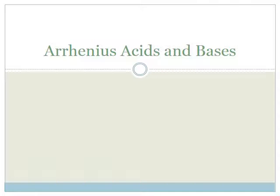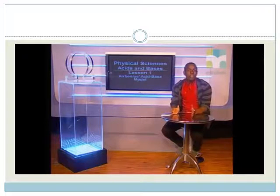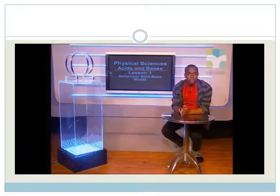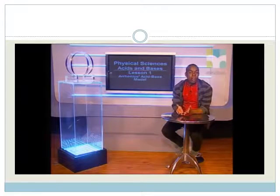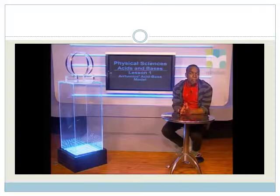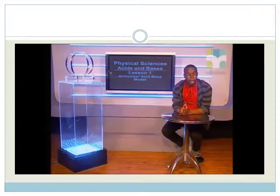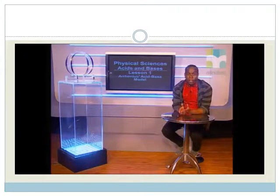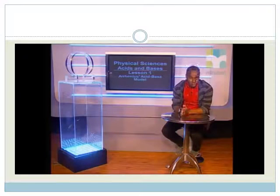Specifically, we're going to be learning about Arrhenius' definition of acids and bases. This lesson will focus on the definition of an acid and a base according to Arrhenius' model. Acids and bases are chemicals found in food substances, laboratories, or industries. Acids have a pH of less than 7. Bases have a pH of more than 7. Let's take a look at examples of acids and bases found in laboratories and in households.